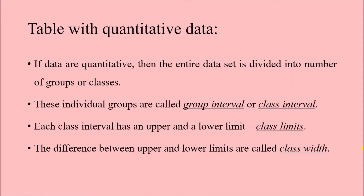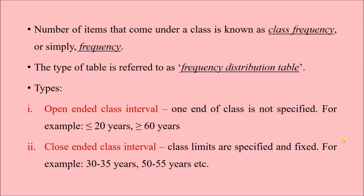Next we focus on quantitative data presentation in tabular form. If data are quantitative — meaning the characteristic can be measured and the frequency can be measured — the entire data set is divided into a number of groups or classes. These individual groups or classes are known as group interval or class interval. Each class interval has an upper limit and a lower limit, known as class limits. The difference between the upper and lower limits is called class width. The number of items that fall under a class is known as class frequency, or simply frequency. This type of table is referred to as a frequency distribution table.